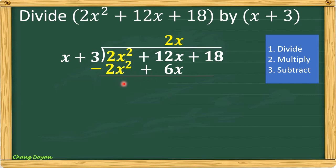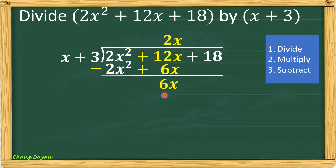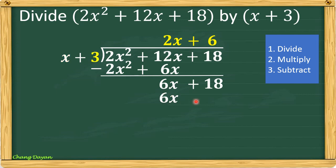Then proceed to subtraction: 2x squared minus 2x squared is 0. 12x minus 6x — the answer is positive 6x. Bring down 18. Going back, divide 6x by x and we get positive 6. Then multiply: 6 times x is 6x, and 6 times 3 is 18. Subtract: 6x minus 6x is 0, and 18 minus 18 is 0. Our answer is 2x plus 6.